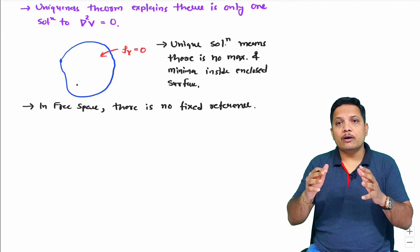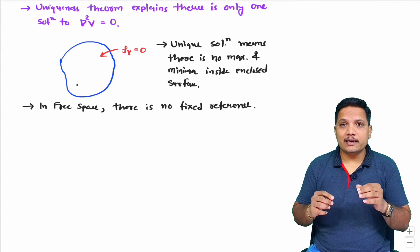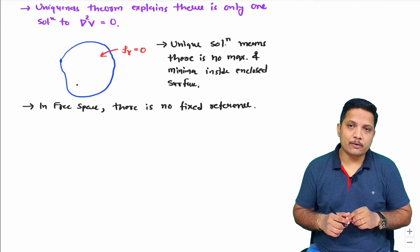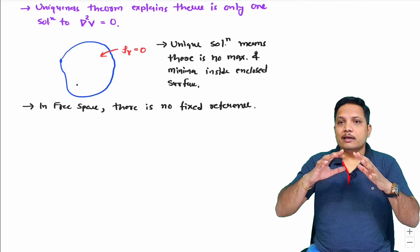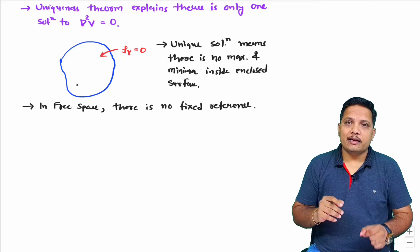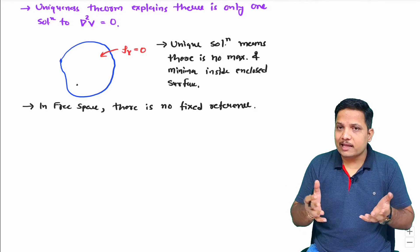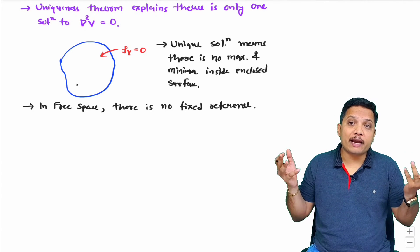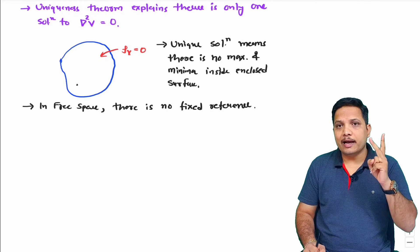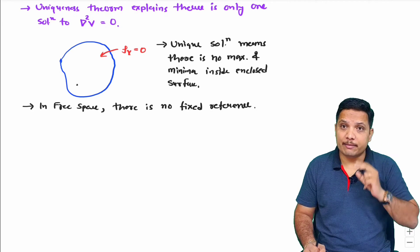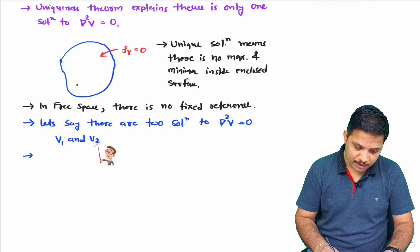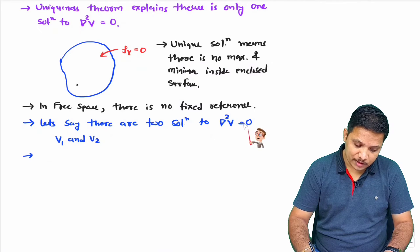Now let us try to have a proof of the uniqueness theorem. In the uniqueness theorem, as stated, there is only one solution to del squared V equals 0. This means inside the surface only one value of potential exists, and on the surface values of potential are defined by external parameters. To prove this, I will first consider that there are two solutions, V1 and V2, for del squared V equals 0, and later I will prove both solutions are the same.